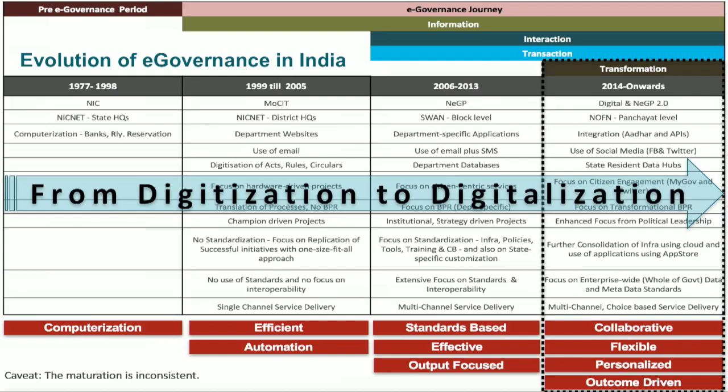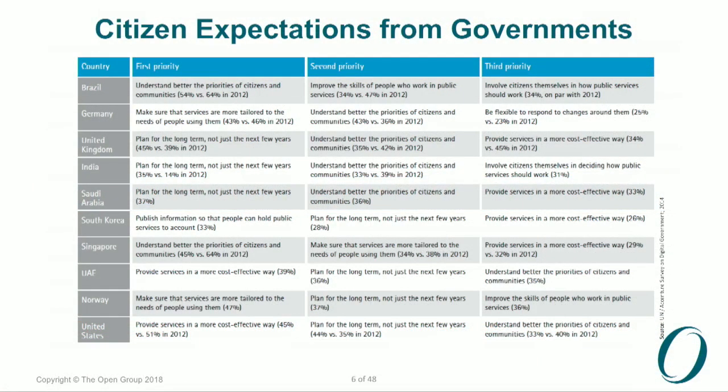This is a survey done by the UN showing what citizens expect of their digital governments. India appears at number four. Number one is: plan for the long term, not just the next few years. When the government came up with a reference architecture, it had to work beyond election cycles, because one thing that happens is a new administration tries to undo whatever the previous one did, even if it was good. Citizens expect the architecture to persist beyond election cycles.